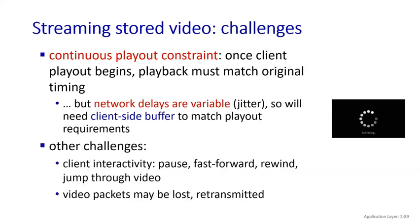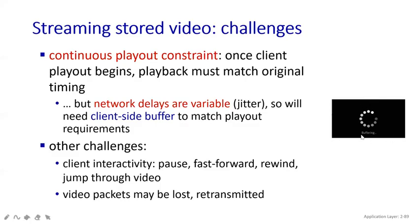Now we will see the challenges happening in your streaming stored video. This diagram represents the continuous playout constraint. Once the client playout begins, playback must match with the original timing. If you are sending a video to your friend and you have proper network but your friend doesn't, buffering will come and it will take some time to load the video. Network delays are variable — this variable is also known as jitter. We need the client-side buffer to match playout requirements.